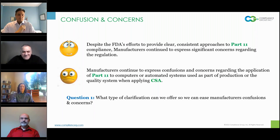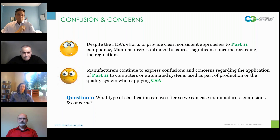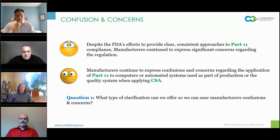Those two points of clarification are important for manufacturers to understand. First, as manufacturers we are interpreting way more applicability to Part 11 than is necessary. Going back and figuring out exactly which parts of a system's records are in scope is an effort worth doing — it takes time, but it is absolutely worth doing. Taking that risk-based approach and documenting it upfront clarifies the scope of what we're doing and why, and that effort is worth spending.